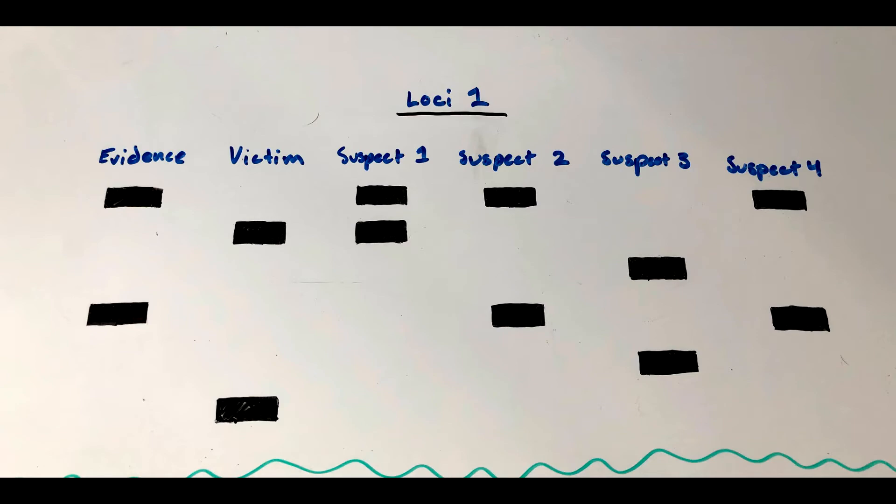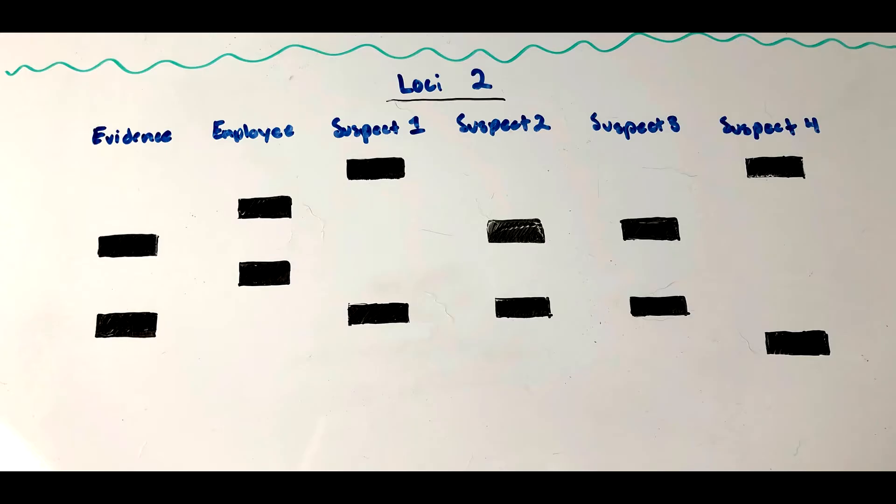These were the results for locus 1 and these were the results for locus 2. We can use these to find the identity of the perpetrator.